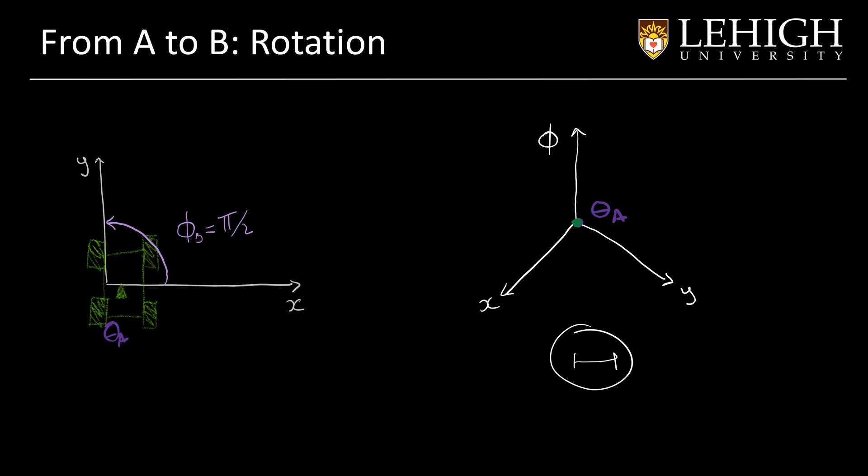The new configuration will have the x and y coordinates at 0, 0 as well. But Phi will be dislocated, and that will be our theta B.